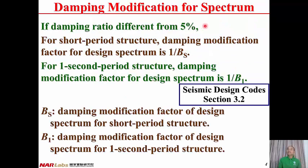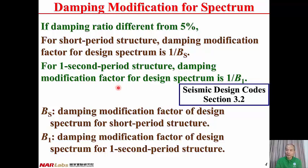If the damping ratio is different from 5%, for short period structures we have a damping modification factor for the design spectrum equal to one divided by BS. For one-second period structures, the design spectrum will be modified by the damping modification factor one over B1. BS is the damping modification factor for the design spectrum for short period structures, and B1 is the damping modification factor for one-second period structures. This information is taken from the seismic design code section 3.2.